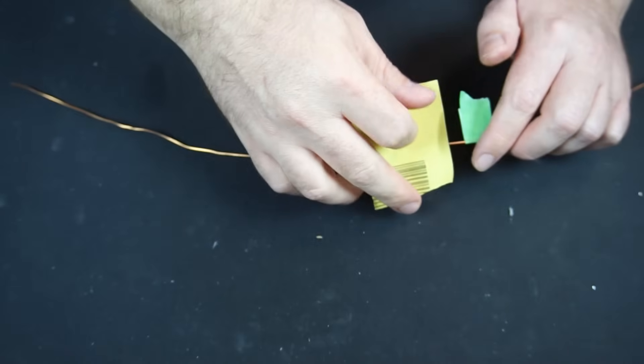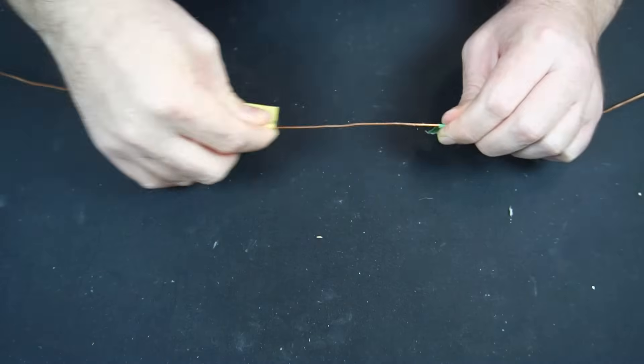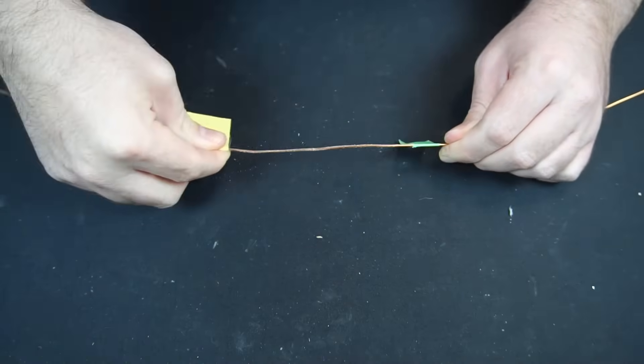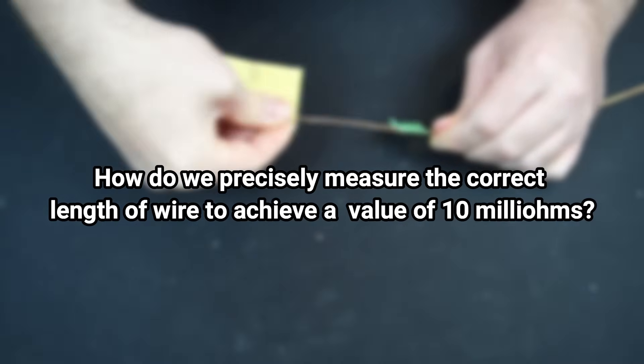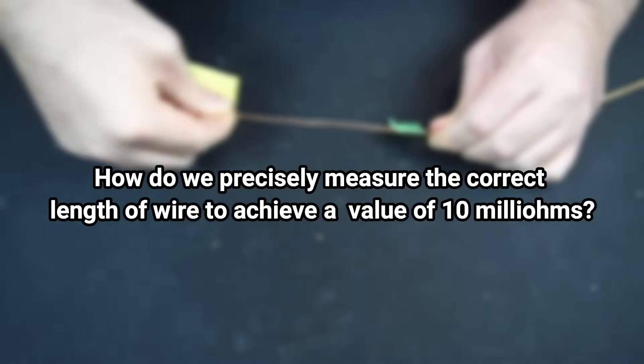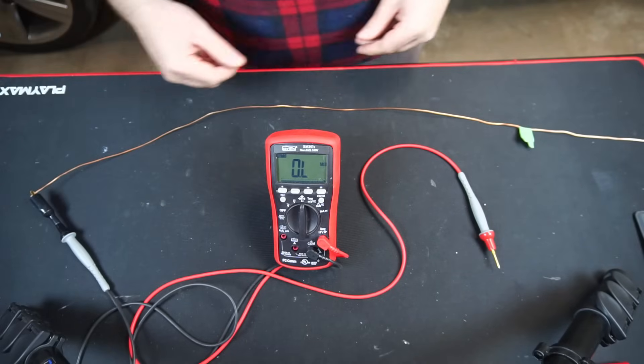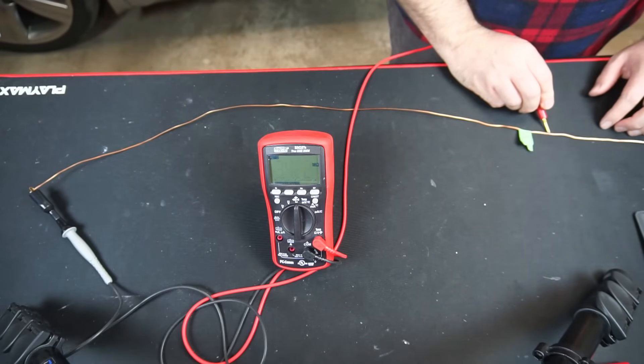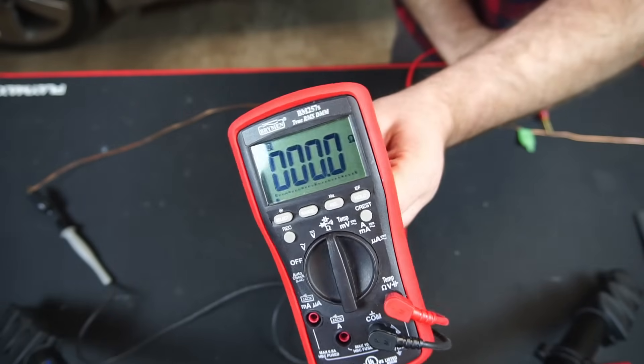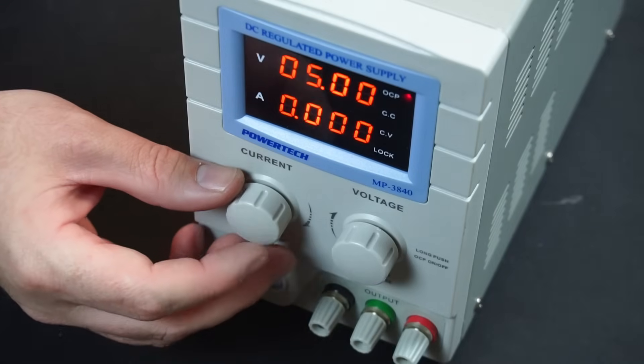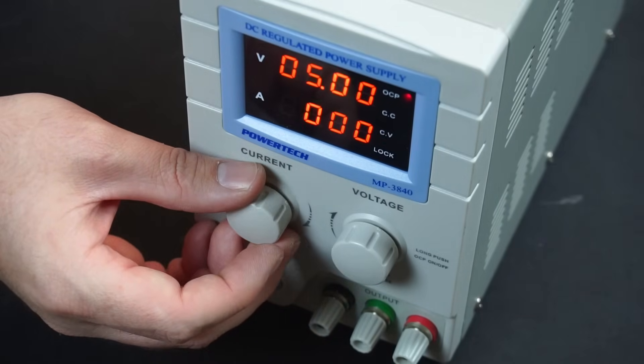I placed a piece of masking tape slightly lower than the theoretical length I need and proceeded to sand off the enamel insulation up to the masking tape. The reason will become clear in a moment. The question is, how do we precisely measure the correct length of wire to achieve a value of 10 milliohms? Well, I can't use my multimeter because it lacks the resolution to accurately measure 10 milliohms, but it can measure millivolts with a reasonable degree of accuracy.